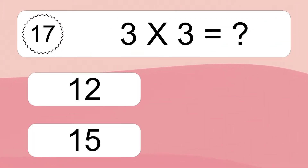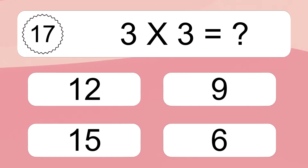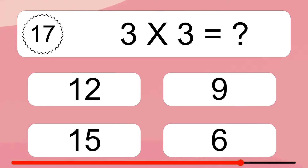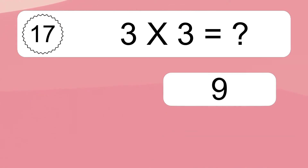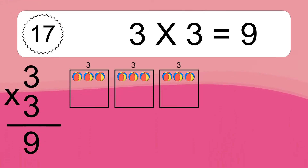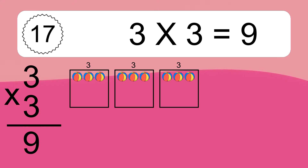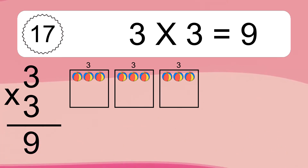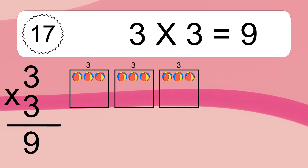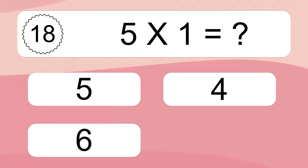3 times 3 equals what? 3 times 3 equals 9. We have 3 boxes, and each box has 3 colorful balls inside. If you count all the balls in all the boxes together, you will have 3 times 3 balls. This equals 9 balls.